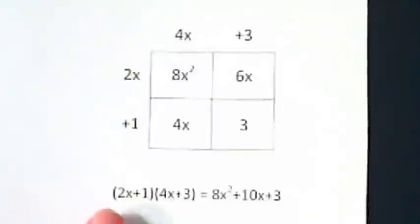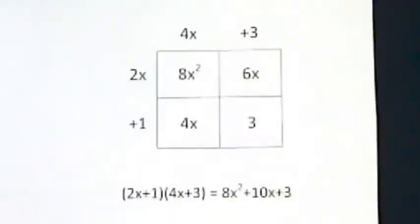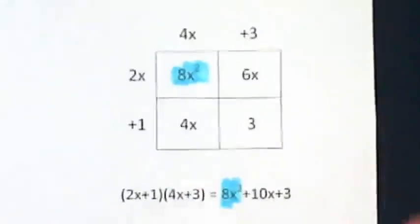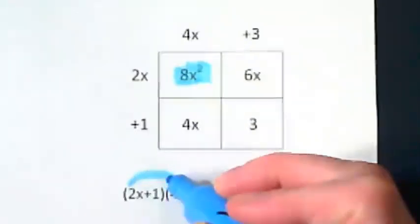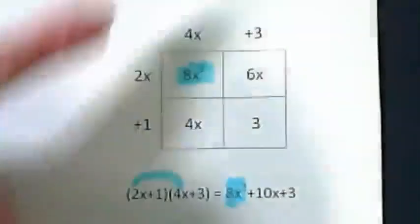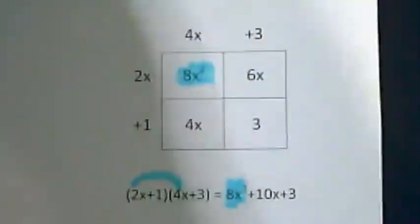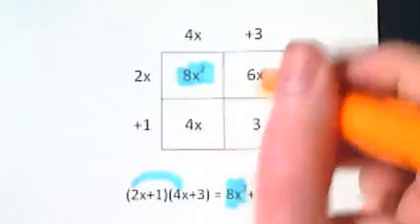This is 2x plus 1 and 4x plus 3, which is across up here. Let's start with this 8x squared. And we find it here. And our binomial times our binomial, it's first term times first term or 2x times 4x.